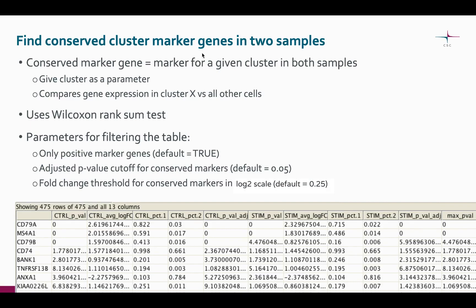Conserved cluster marker genes mean genes that are differentially expressed in that particular cluster in both samples. Here, like in the one-sample analysis, we are always comparing the cluster of interest to all the other cells in the dataset.